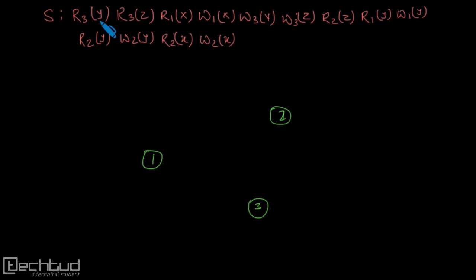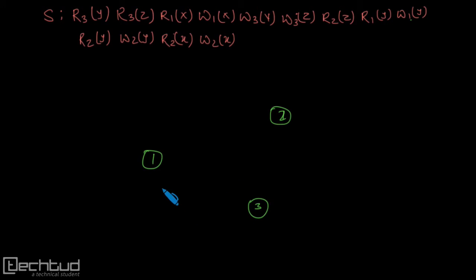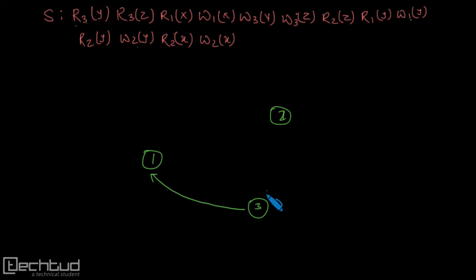r3y will be conflicting with something other than a read — that is a write on the y variable. So let us look for y. This is y but it is the same transaction. Here we have read y and write y from transaction 1. So I will draw an edge from 3 to 2 — because this is read y and this is write y — and from 3 to 2.